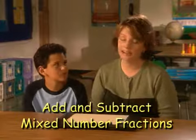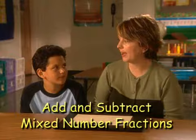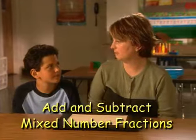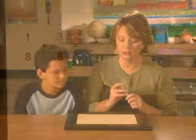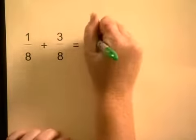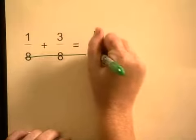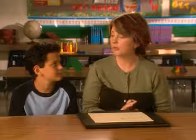Today we're going to talk about adding and subtracting fractions with unlike denominators. So far we've been doing it when they have the same denominator, like this one: 1 eighths plus 3 eighths. What's 1 plus 3? 4. And we bring our 8 over so we have 4 eighths.